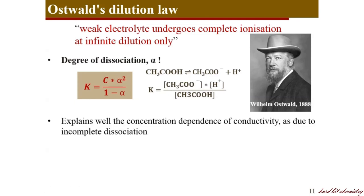Now, the weak electrolyte equivalent conductance increases only very gradually with dilution at first, then gives a drastic increase at infinite dilution. Because at normal concentrations, the ionization is very poor, contributing to very small change in conductance, but near infinite dilution according to Oswald's dilution law, all the molecules undergo ionization, furnishing a large number of ions, contributing to an increase in conductance. This is how Oswald's dilution law explains the variation of equivalent conductance with concentration for weak electrolytes.